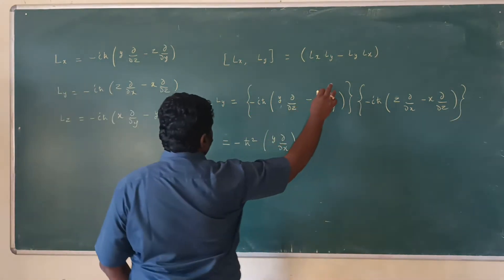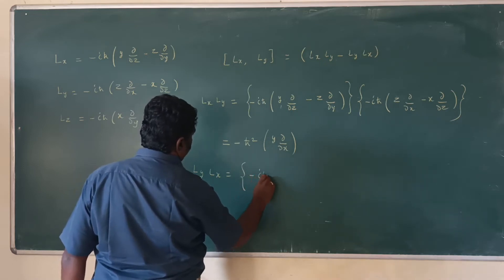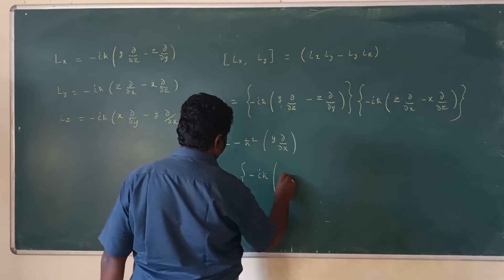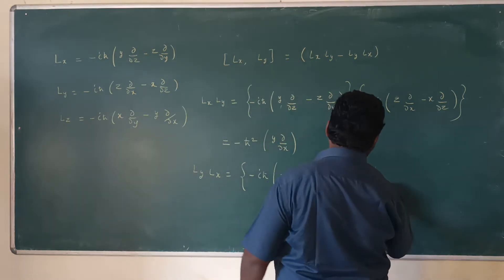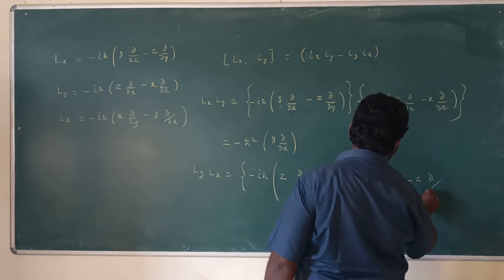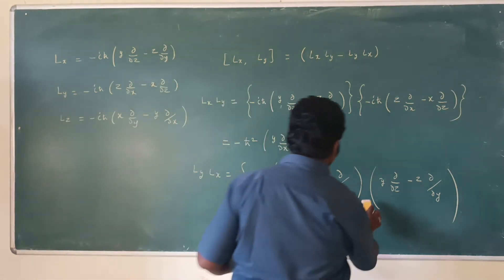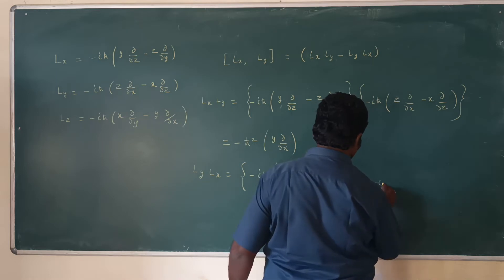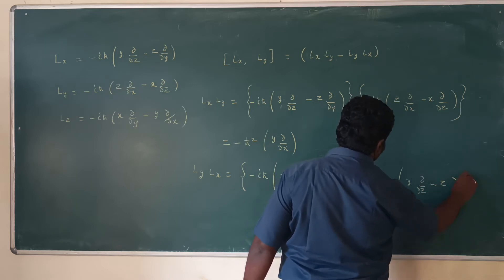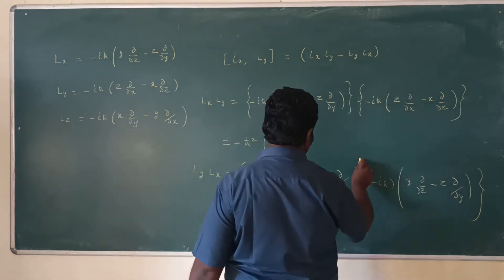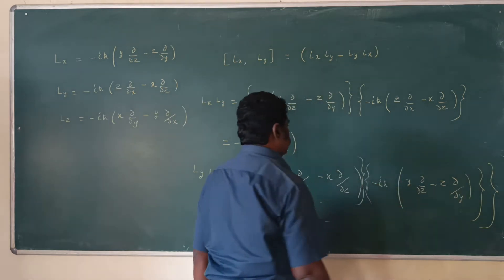Now we have to calculate the next term, LyLx. LyLx equals: substitute Ly = -iℏ(z ∂/∂x − x ∂/∂z) into LyLx, and Lx = -iℏ(y ∂/∂z − z ∂/∂y), also multiplied by -iℏ. We write -iℏ(z ∂/∂x − x ∂/∂z) acting on -iℏ(y ∂/∂z − z ∂/∂y). This is LyLx.